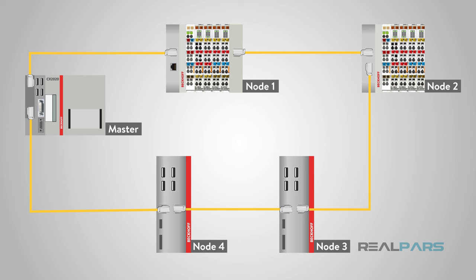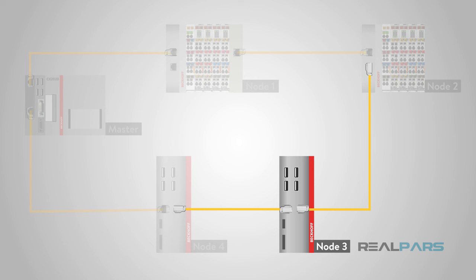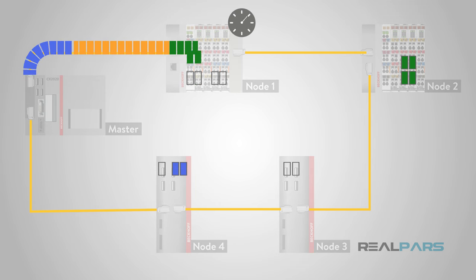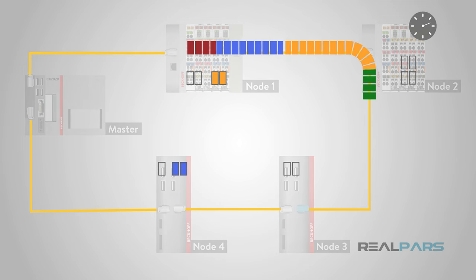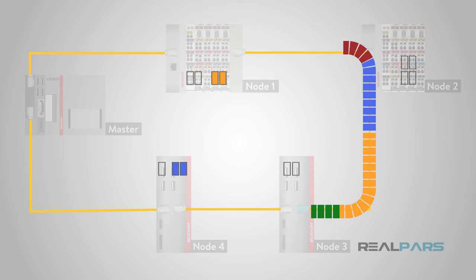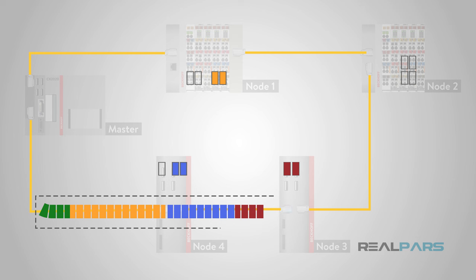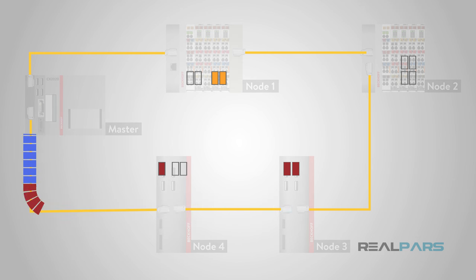EtherCAT networks do not require external switches in the network. Each EtherCAT device typically has two Ethernet ports — the first port being the receiving port or previous node's cable, and the second port connected to the next node in the network. The processing of the data on the fly in the hardware of the device is a major advantage of EtherCAT. Although there is still a small delay in the data frame as the device adds its data to it, it is greatly reduced by the often single data stream of EtherCAT versus the multiple Ethernet frames used in an Ethernet network.